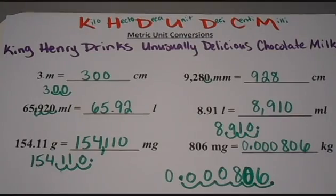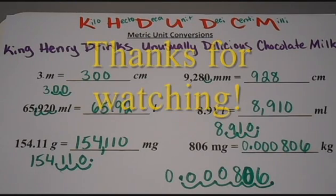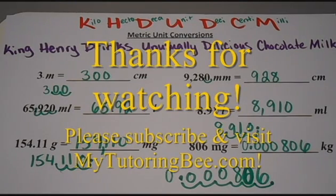So if you can remember the sentence King Henry drinks unusually delicious chocolate milk, you can just jot those beginning letters down at the top of your paper if you're taking a test or doing homework, and that will really help you with these conversions with the metric system. I hope this helps — thanks so much for watching. Bye!